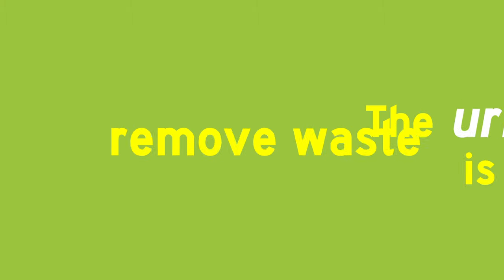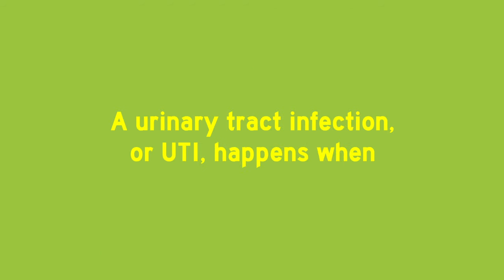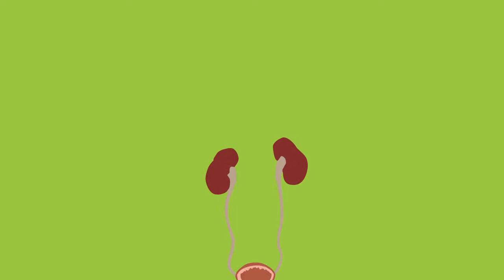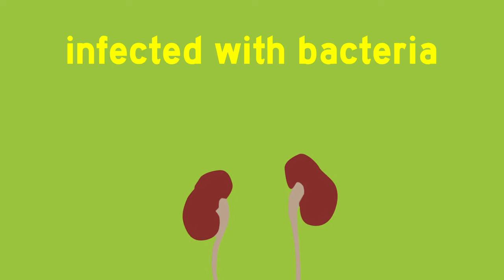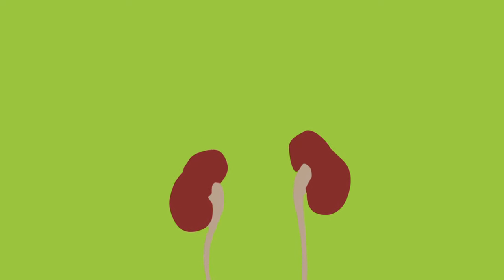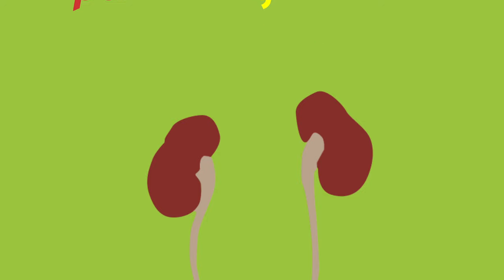The urinary tract is used to remove waste and excess water from the body. This consists of the bladder, kidneys, ureters, and the urethra. A urinary tract infection, or UTI, happens when any part of the urinary tract becomes infected with bacteria and gets inflamed, which causes pain during urination.